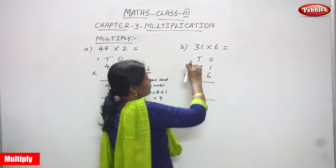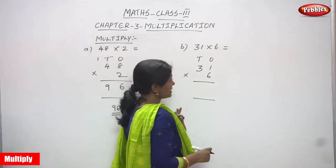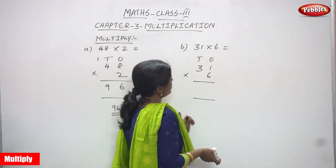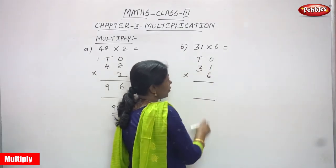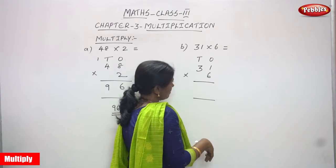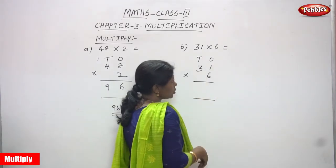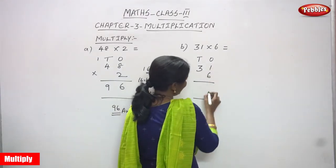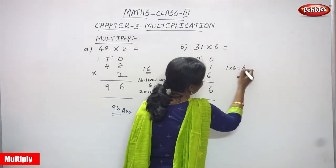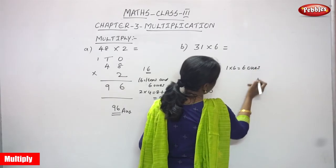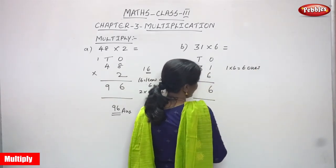Next, the B sum. Now I am going to solve the B sum. This is also multiplication. So this is 31. 31 is a two-digit number and 6 is a one-digit number. We are going to multiply ones and tens. So we are going to multiply 1 six are 6. So 1 six are 6. That means 6 ones. I have written the 6 ones here.